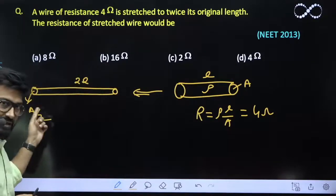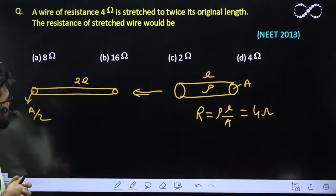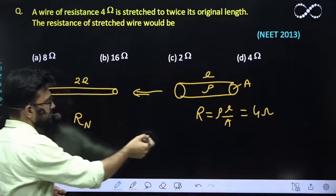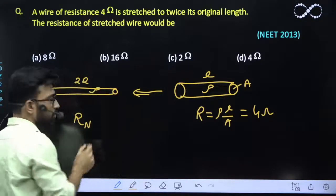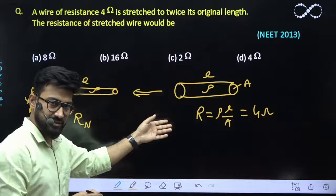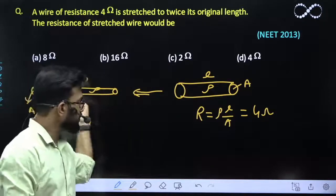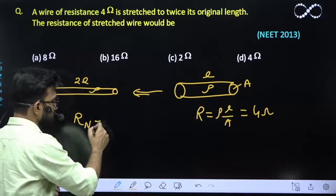Now for the new resistance R_new, the resistivity would still be ρ because it's the same material that has been molded. The length has become twice, so the new resistance would be: